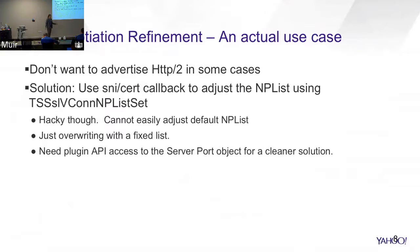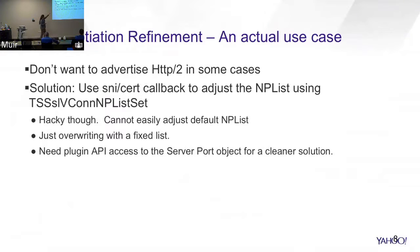Something that happened to us in the last month or two: a customer/property said they can't do HTTP/2 — it doesn't work, because of Apple. We didn't want to turn off HTTP/2 for everyone since HTTP/2 is very good. So Alan wrote a plug-in that hooked on the cert callback to adjust the NPN/ALPN list for that particular domain. It was activated via remap — we look at the SNI name and then manipulate the NPN list. It works, but it's hacky.